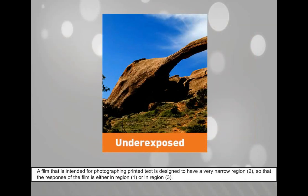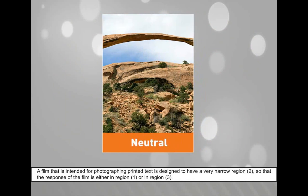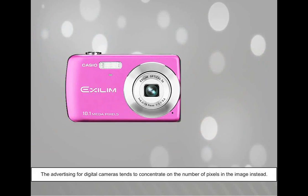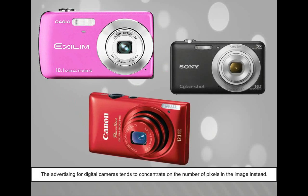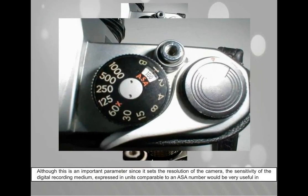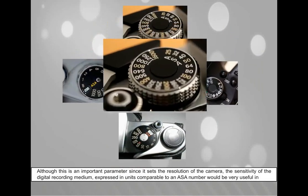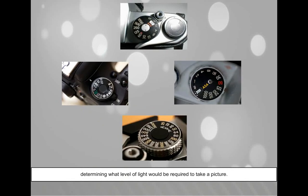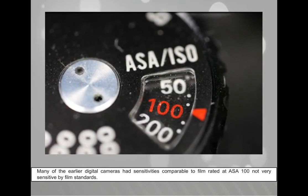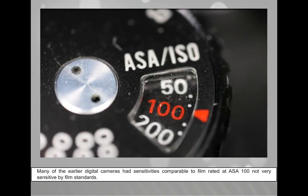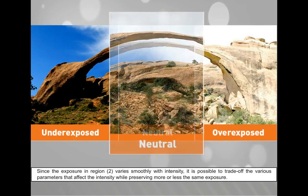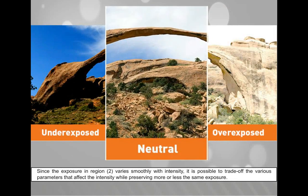A film intended for photographing printed text is designed to have a very narrow region 2, so that the response of the film is either in region 1 or in region 3. The advertising for digital cameras tends to concentrate on the number of pixels rather than sensitivity. Many of the earlier digital cameras had sensitivities comparable to film rated at ASA 100 — not very sensitive by film standards. Since the exposure in region 2 varies smoothly with intensity, it is possible to trade off the various parameters that affect the intensity while preserving more or less the same exposure.